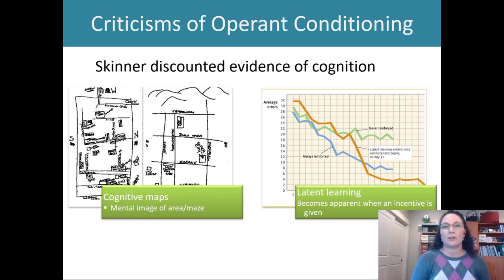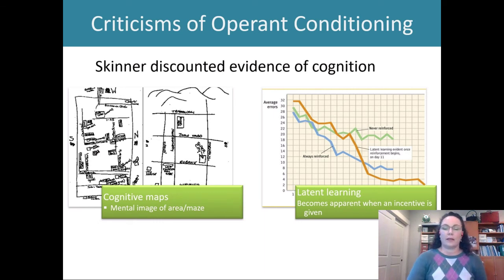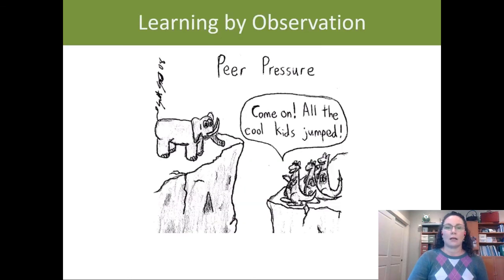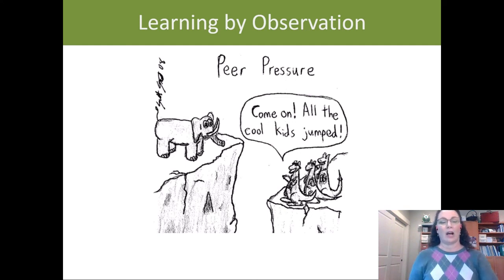That shows the rats are clearly thinking something. Skinner didn't think it was important to talk about these things because he thought it muddied the waters of understanding. But this kind of research suggests it is worthwhile to talk about cognition. Our final segment will be learning by observation.